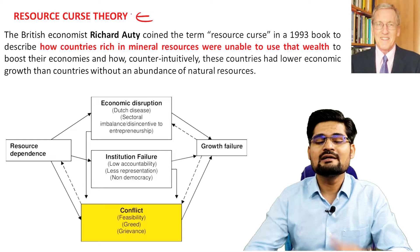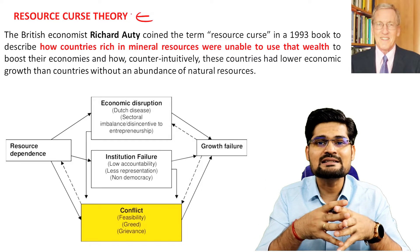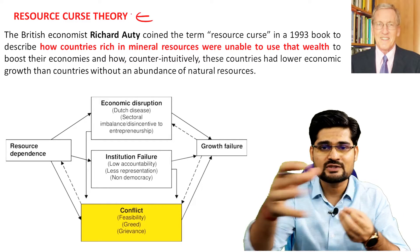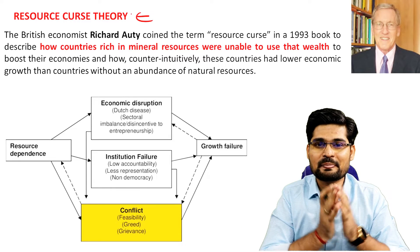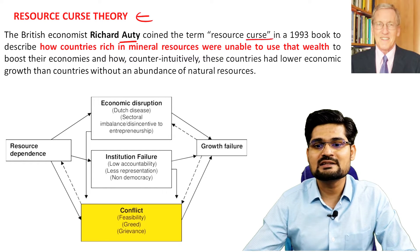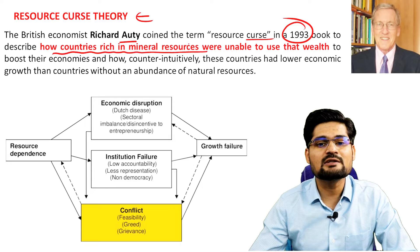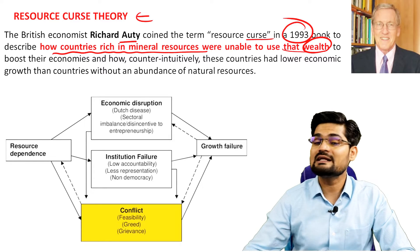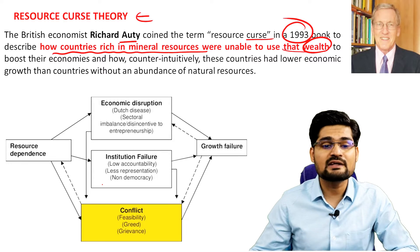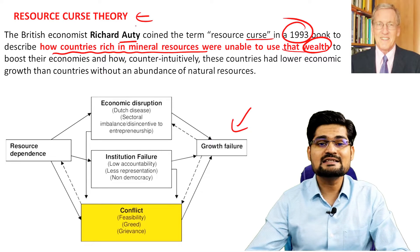Another famous theory is the resource curse theory. Having too much of a resource is a curse if you don't have the human resource to actually exploit that natural resource. British economist Richard Auty coined this term 'resource curse' in 1993 in his book, describing how countries rich in mineral resources were unable to use that wealth for themselves — they were still controlled by external factors. Most African countries are ruled by this particular phenomenon.